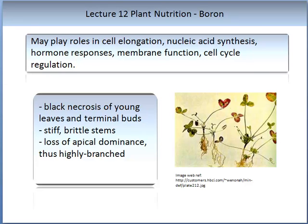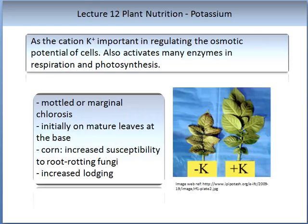You will notice in the illustration that the leaves have gone red. As a cation, potassium has an important role in regulating the osmotic potential of cells. It also activates many of the enzymes in respiration and photosynthesis. When potassium is deficient, you may see mottled or marginal chlorosis, initially on mature leaves at the base. Corn has increased susceptibility to root rotting fungi with potassium deficiency, and you may observe increased lodging. Here we have an image of deficient potassium alongside an image of the correct amount of potassium.